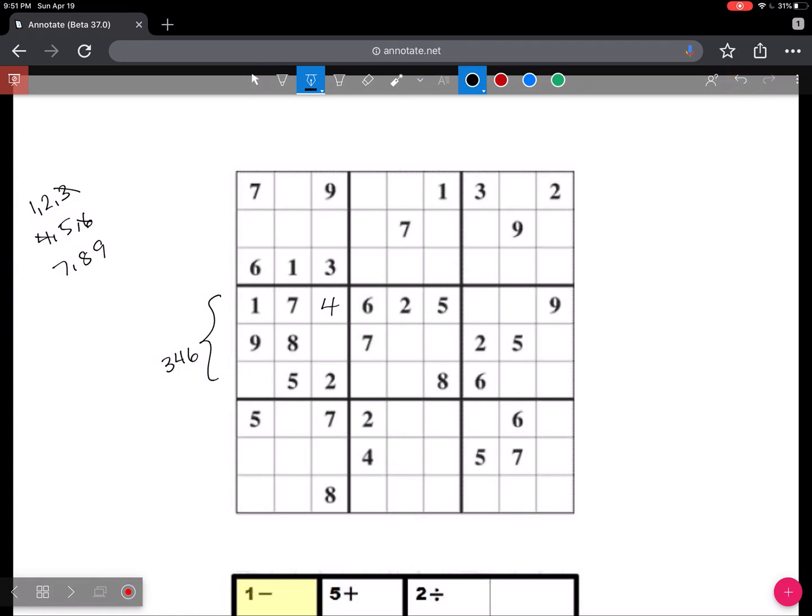So that's your 4, cross off the 4 because you've used it. Now, just like this spot couldn't be a 3 because of this, this spot can't be a 3 because of this. So that means the 6 has to go here, and the 3 has to go there, and now that grid is done.